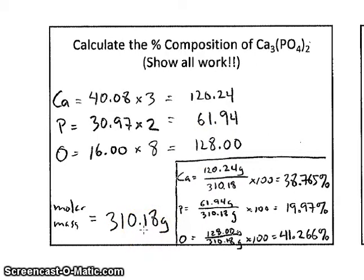Then to calculate the percent from each of the individual elements, we will take the part for calcium 120.24 divided by the whole, in this case the molar mass, to find 38.765% for calcium.